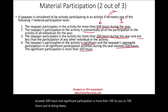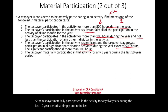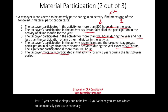Test five: the taxpayer materially participated in the activity for any five years during the last 10-year period. So in the last 10 years, if you materially participated for any five, you are assumed to have an active role.